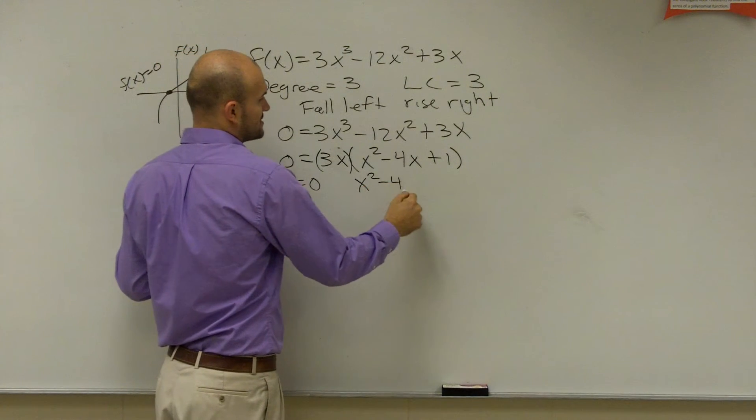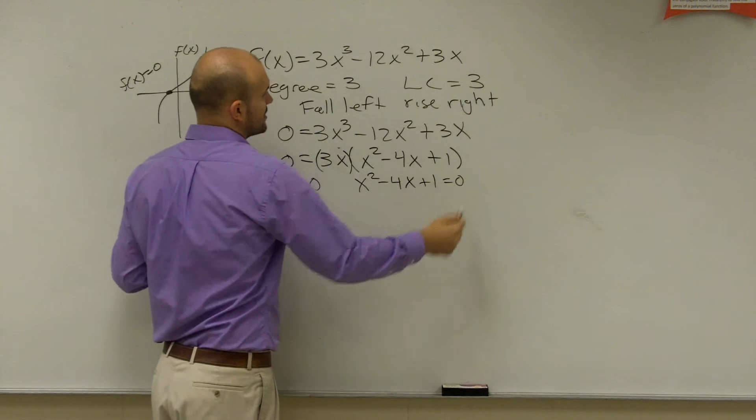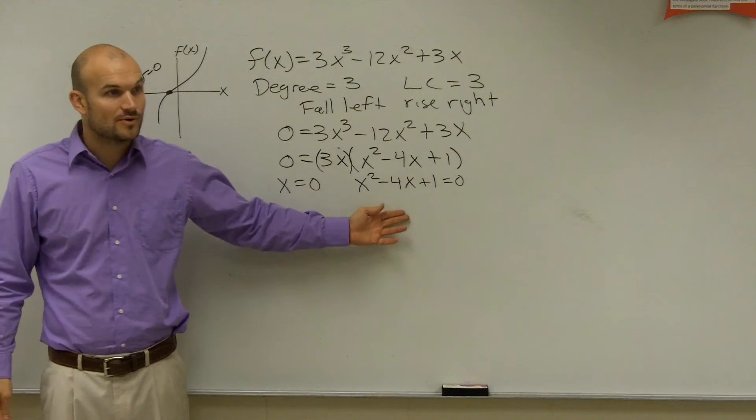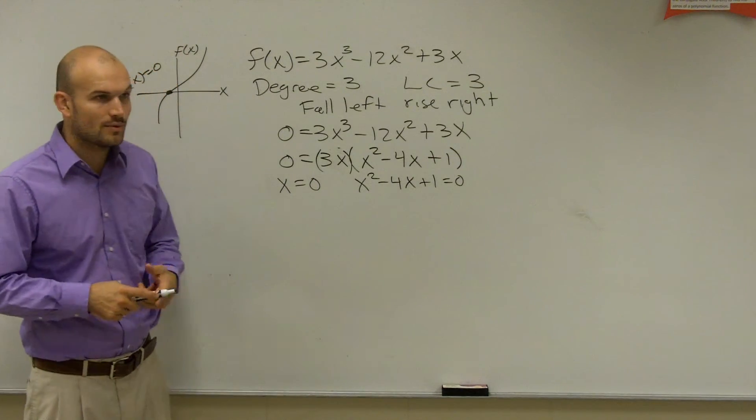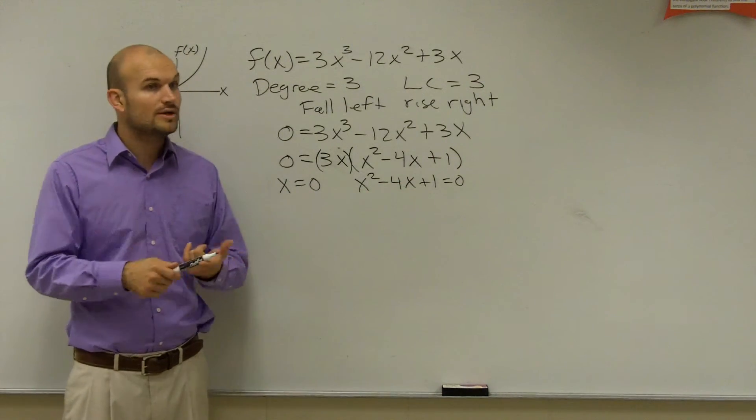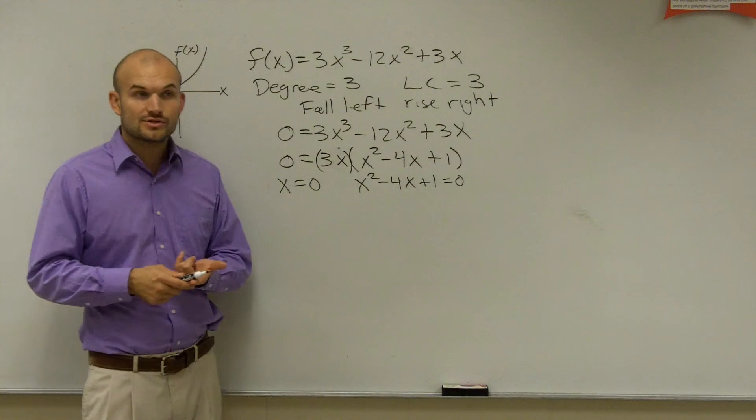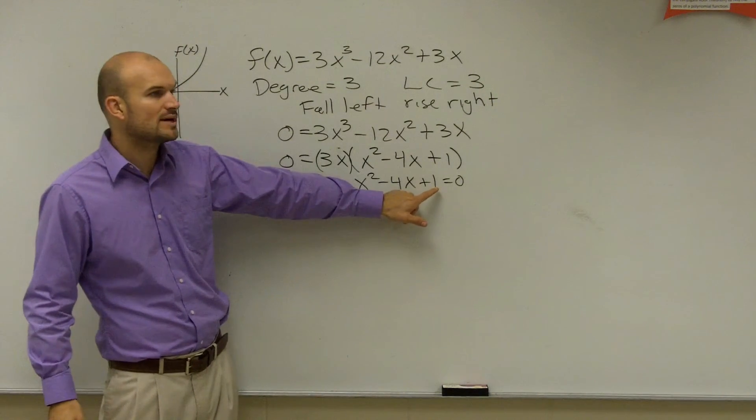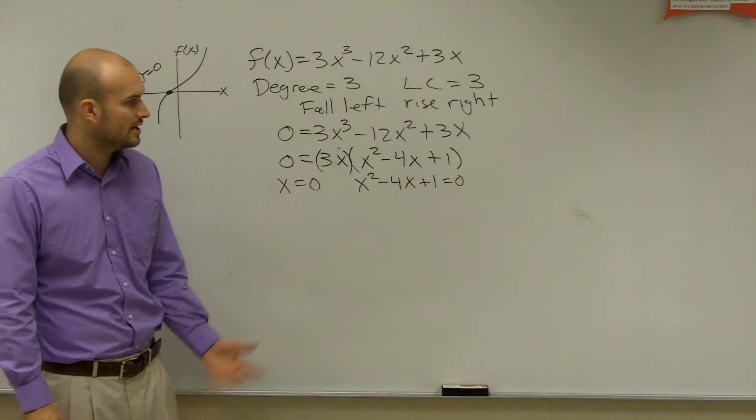Then, you have x squared minus 4x plus 1 equals 0. Well, again, we've got to still factor this more. So, we look at this and what are our possible ways again. Now, it's a quadratic. We can use quadratic formula. We can use completing the square. And I can't factor it because there's no two numbers that multiply and give you 1 and give you 4, right?